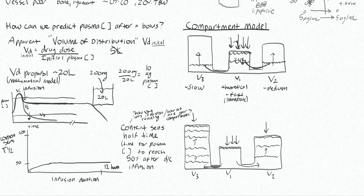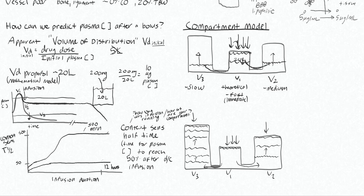In the first 30 minutes or so, the time for propofol to reach half its plasma concentration is smaller because the compartments aren't saturated yet. Once saturated, the fall in plasma concentration depends more on drug elimination from the body. Fentanyl, by contrast, has a context-sensitive half time that increases substantially, plateauing around 500 minutes — making it a poor choice to run as an infusion if acceptable wake-up time is needed. Knowing a drug's context-sensitive half time is important for any drug run as an infusion.